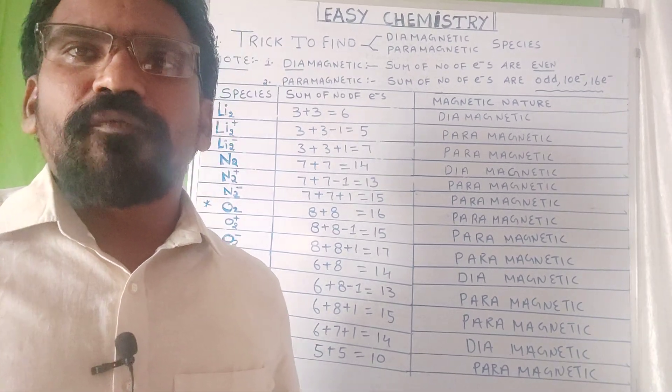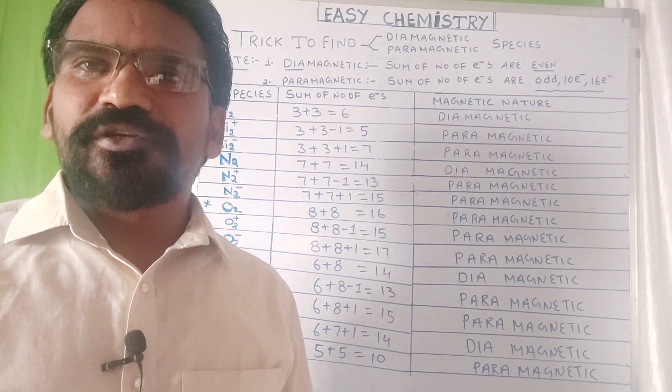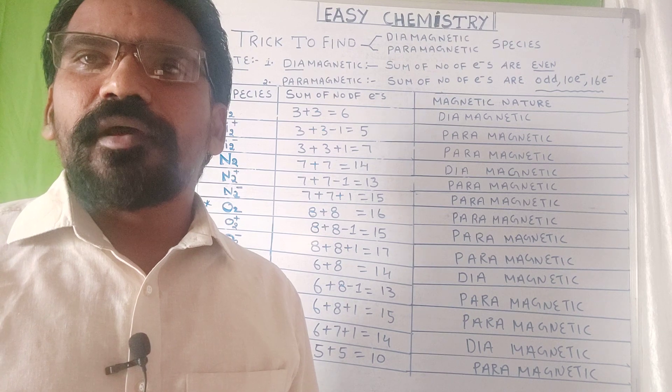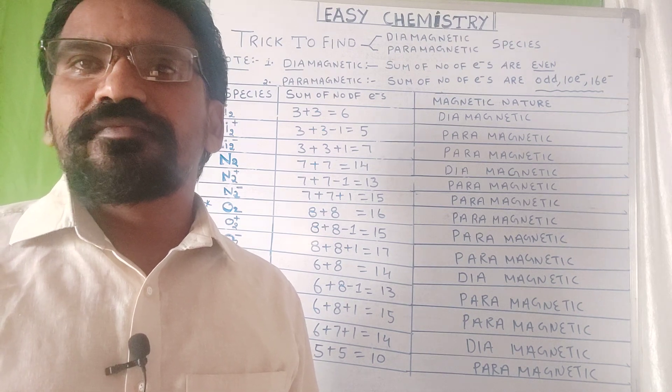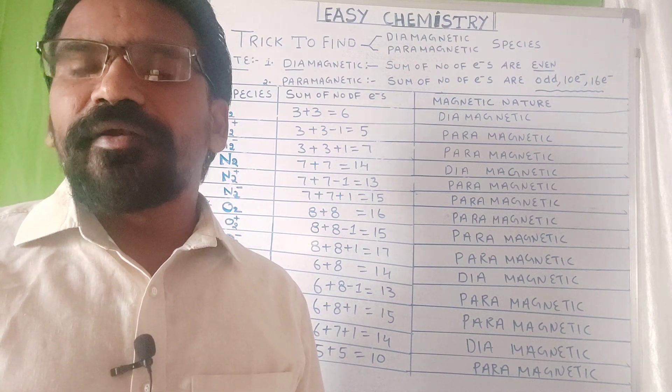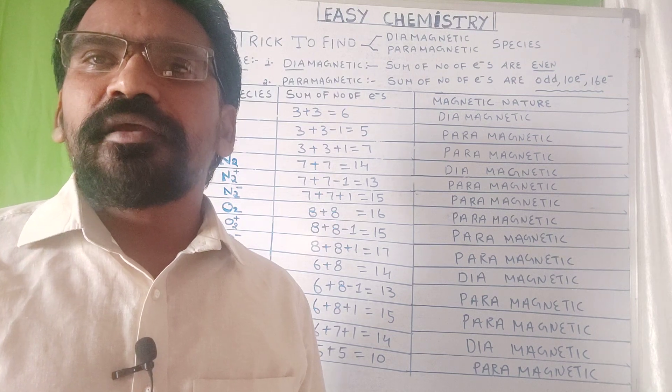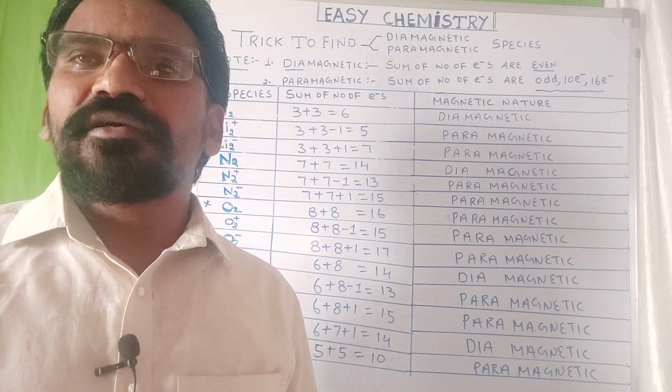Hi students, welcome to Easy Chemistry. Today our topic is Trick to Find Diamagnetic and Paramagnetic Species.